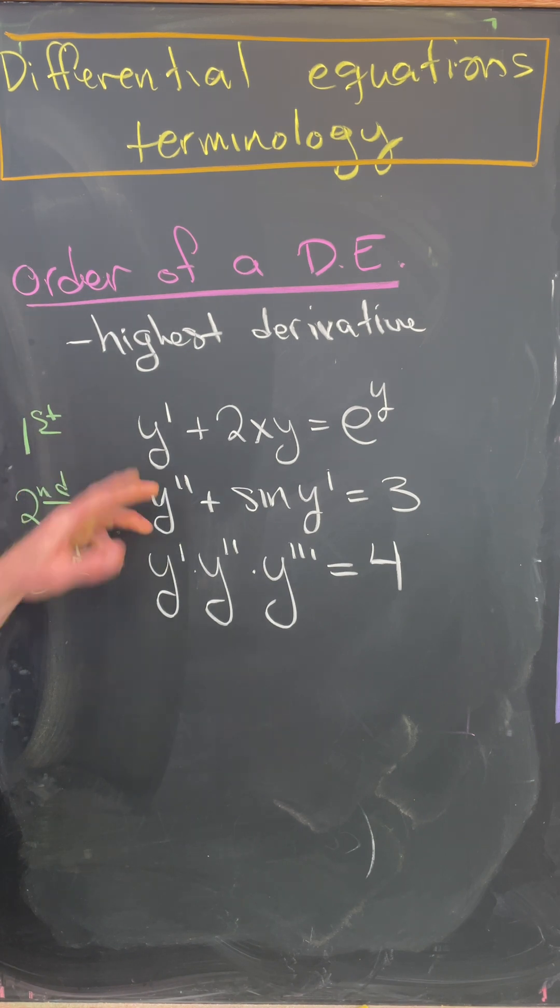So a first-order differential equation would have a first derivative and nothing higher. A second would have a second derivative and nothing higher. A third would have a third derivative and nothing higher.